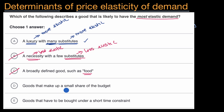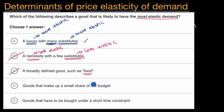Goods that make up a small share of the budget — this goes back to the example with bubble gum. If bubble gum goes from 25 cents to 30 cents, we might not care so much, versus if a car goes from $25,000 to $30,000. Small things where we don't care much about price changes implies less elasticity, so this would definitely not be the most elastic demand.